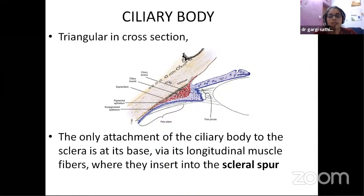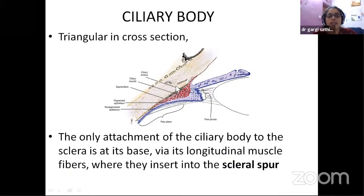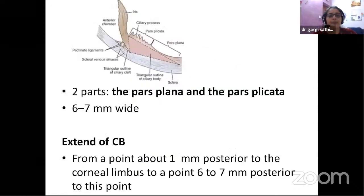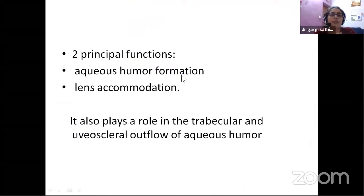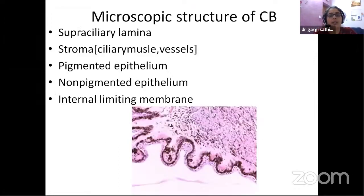Coming to the next main star, which is the ciliary body. Ciliary body is triangular in cross-section. The apex will point towards the ora serrata. From the base, the iris starts, and the only place where it is attached to the sclera is at the scleral spur, which is at the angle of the anterior chamber. It has two parts: the anterior pars plicata, and then the pars plana — around six to seven millimeters. From the outside, it starts from around one millimeter behind the limbus and goes six to seven millimeters posteriorly. The very important functions are aqueous humor formation and lens accommodation.